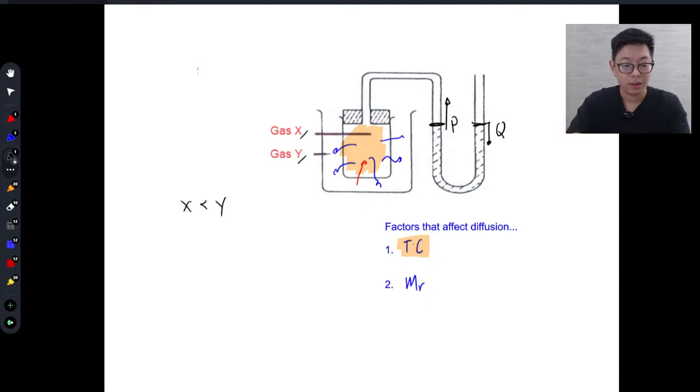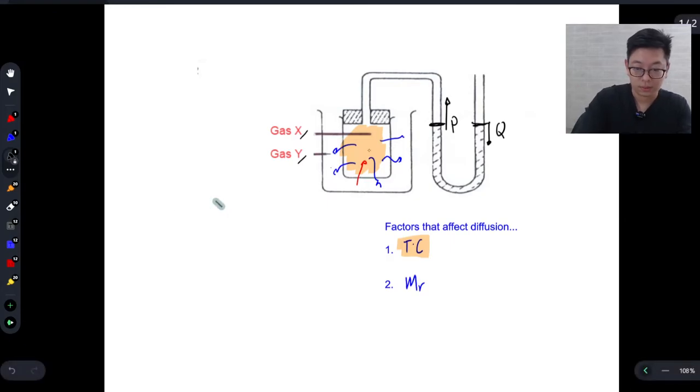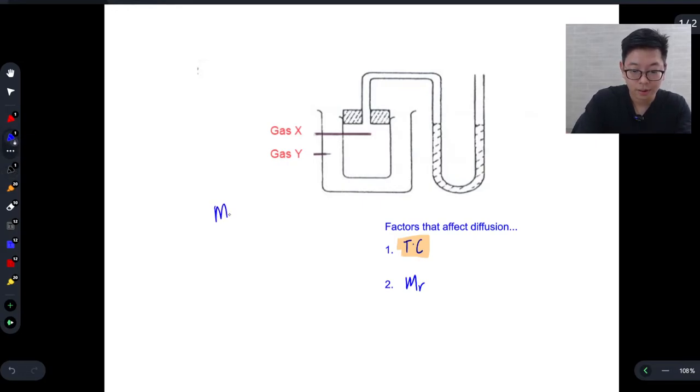Okay, so now let's assume, if you didn't quite catch that, let me do it the opposite. So let's assume now I tell you that the MR of Y is less than X. Now if that happens, gas Y will diffuse in to the porous pot much faster than gas X can diffuse out. As a result, the pressure inside the porous pot will increase.